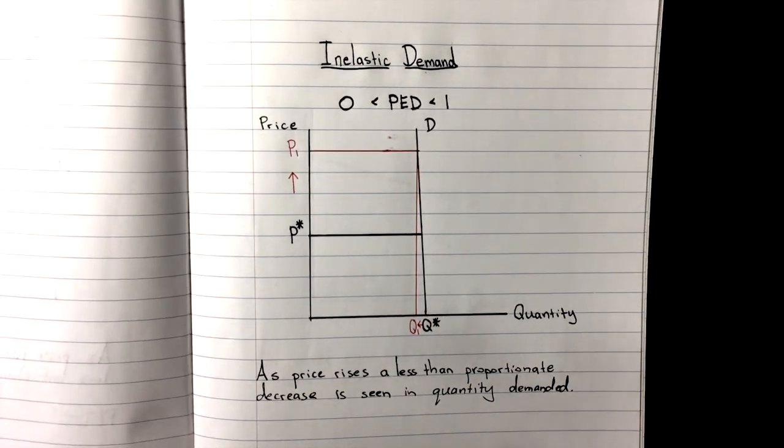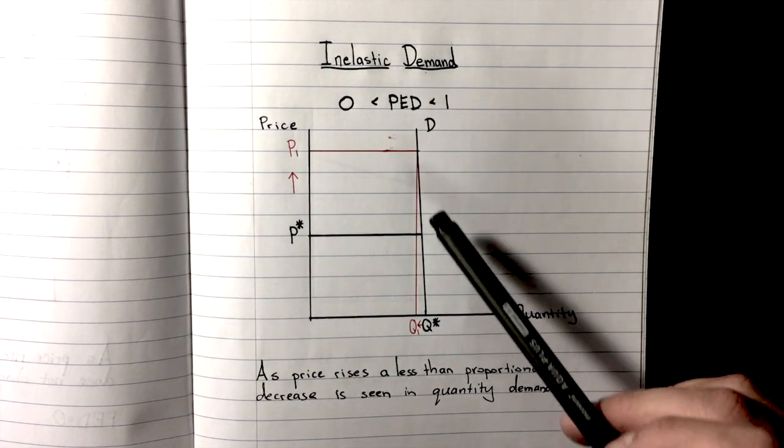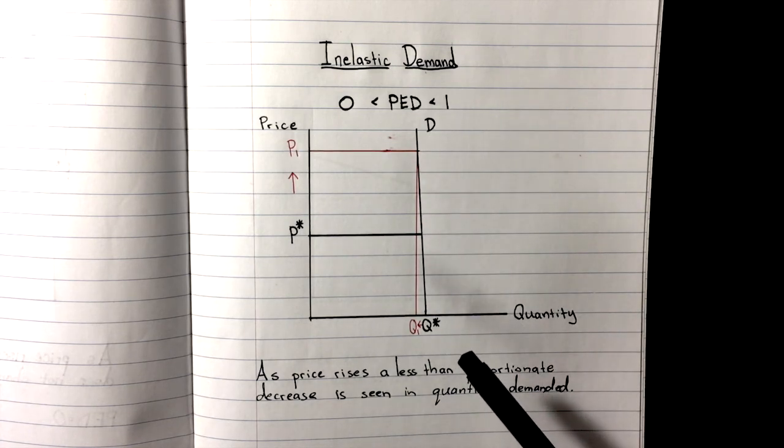Now when we take a look at inelastic demand, not perfectly inelastic, we're going to see that this line is also quite steep, but not perfectly straight up.